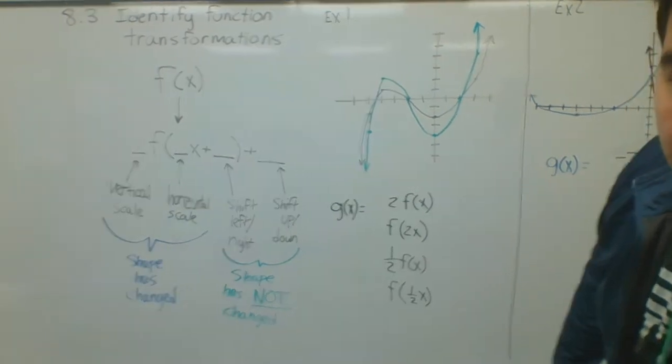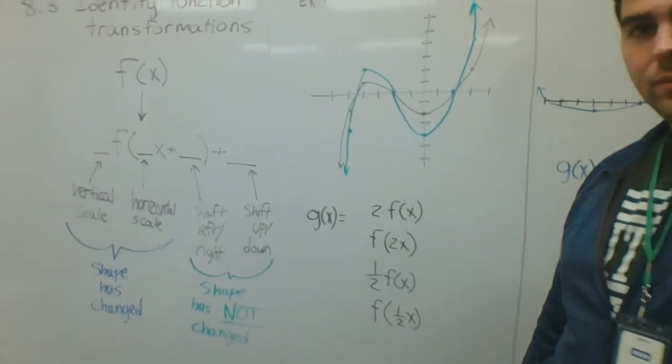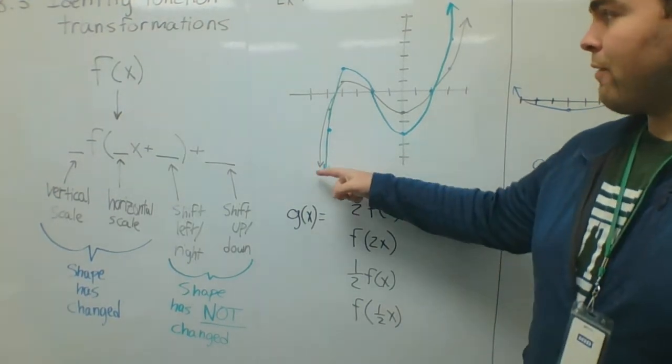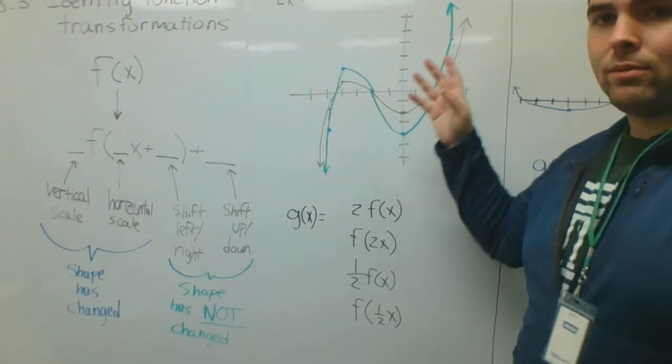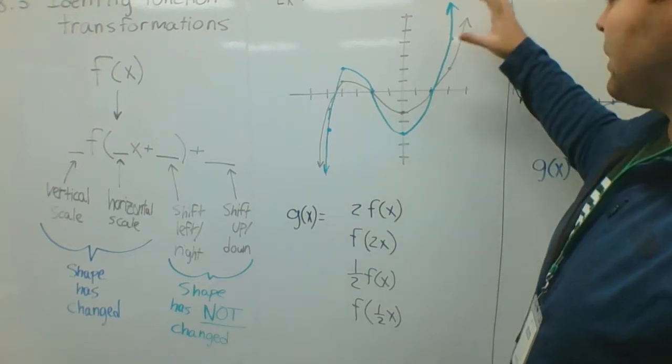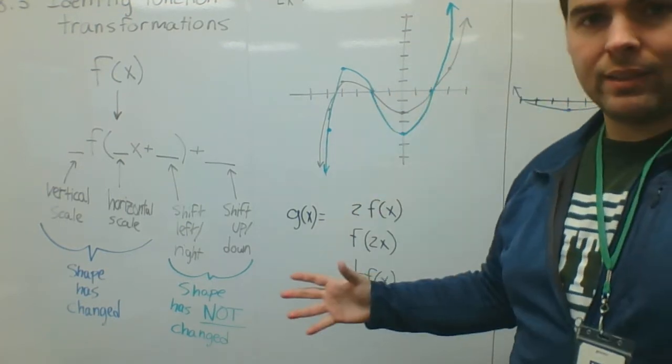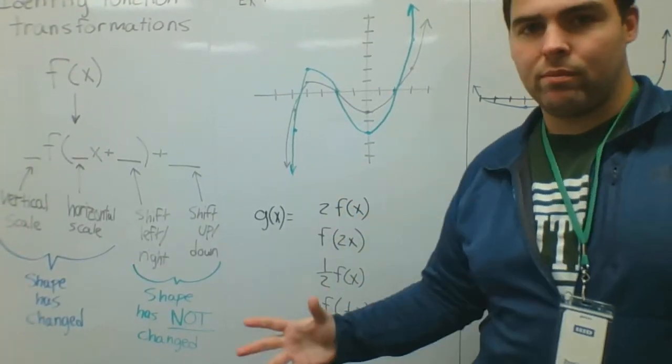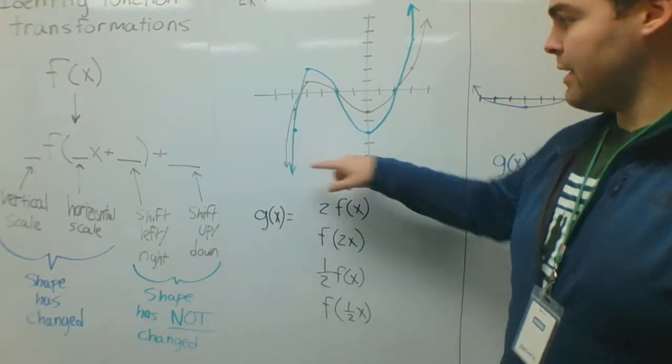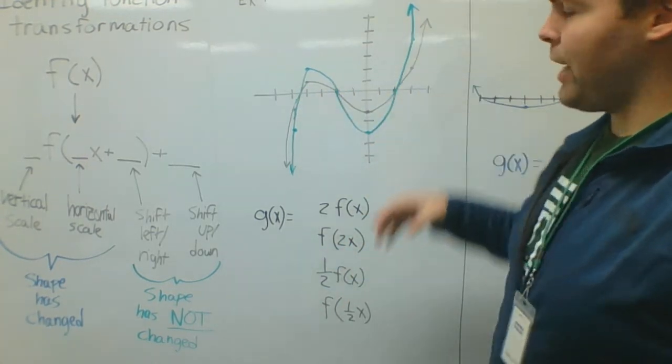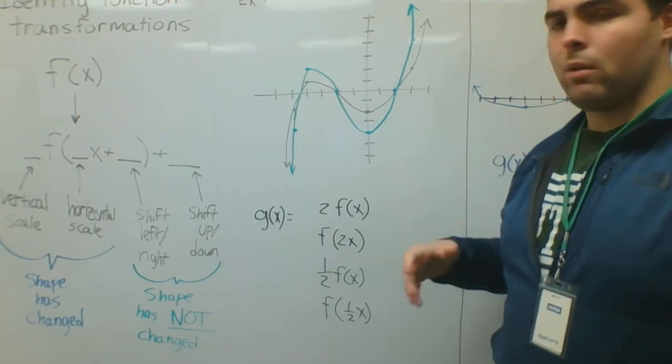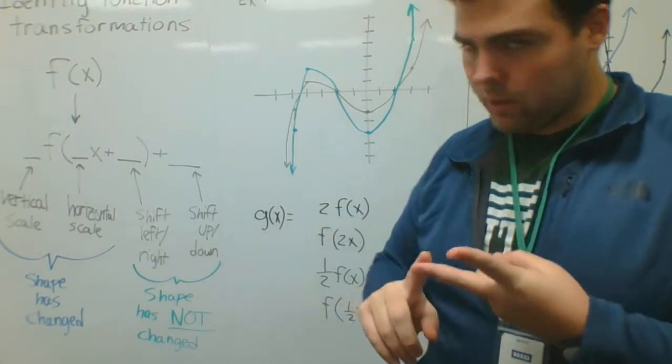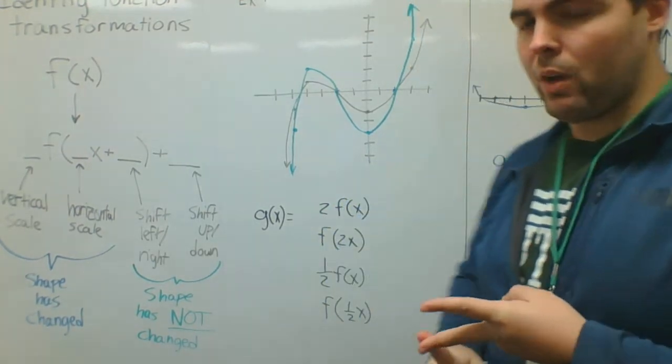So let's look at this first example here. Example one, there's going to be four examples. I have my original graph in black here. This is f of x. So I want to compare this green graph, this g of x, to what it is. So the first thing I do when I do these problems is I say, is the shape the same? And this is steeper here. It gets changed in steepness. So the shape isn't the same. So I know that it's either going to be a vertical scale or a horizontal scale.